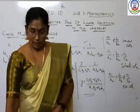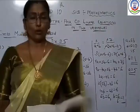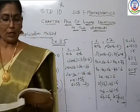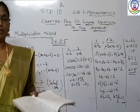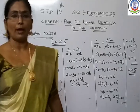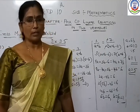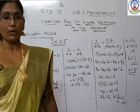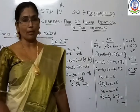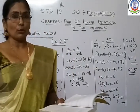Now based on these three conditions we have to solve Exercise 3.5. Question number 1 asks: which of the following pairs of linear equations have a unique solution, infinite solutions, or no solution? If there is a unique solution, you have to find that answer by the cross multiplication method. It is already mentioned — if there is a solution, you must use that method only.